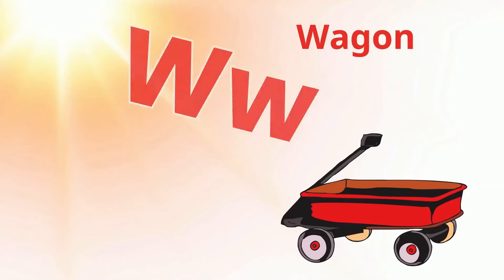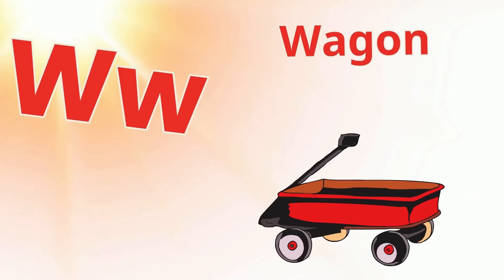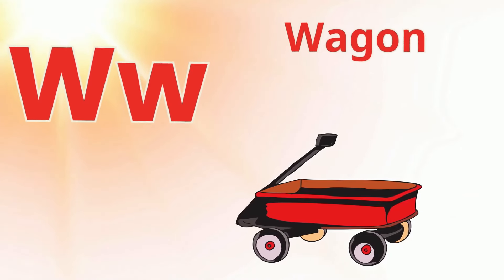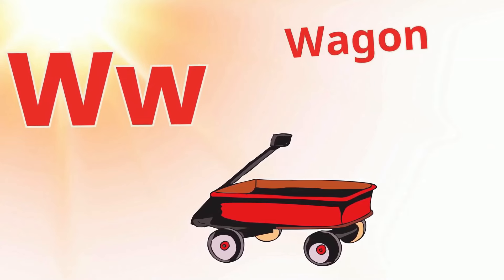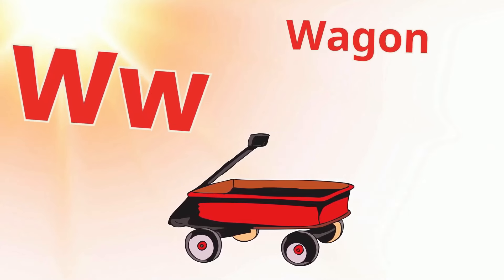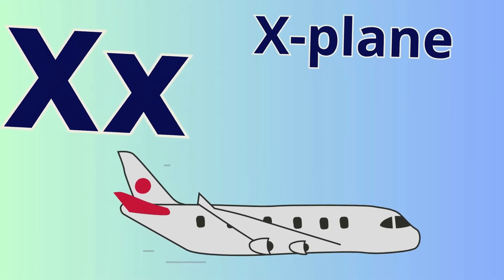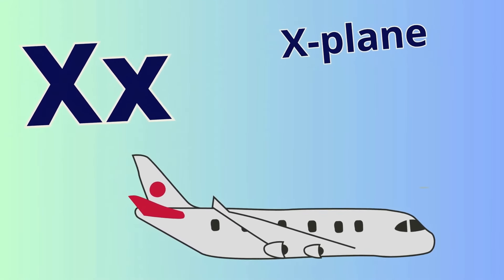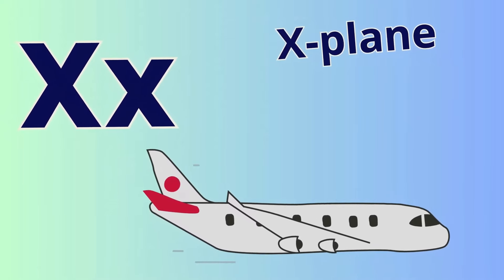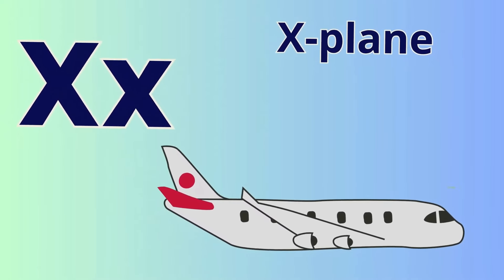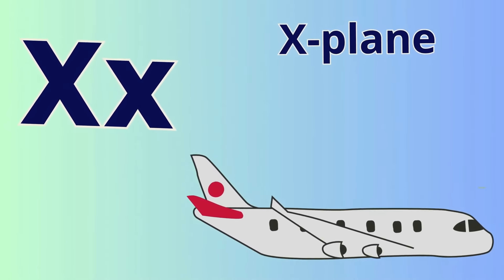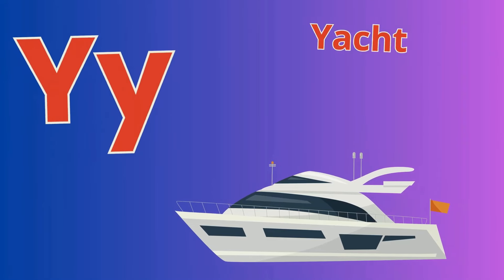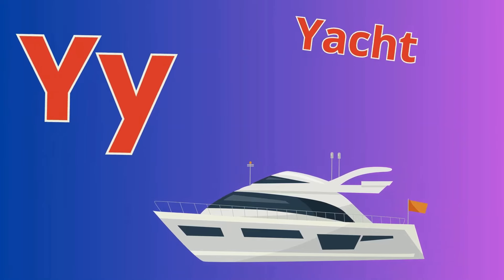W is for wagon, W-W wagon, pulled along the path, clank-clank, wagon. X is for x-plane, X-X x-plane, experimental and fast, whoosh, x-plane.